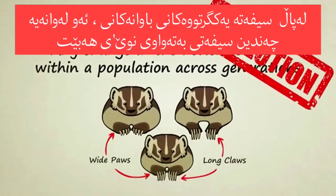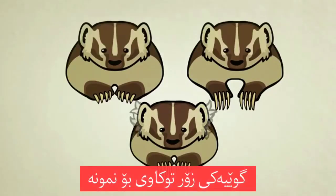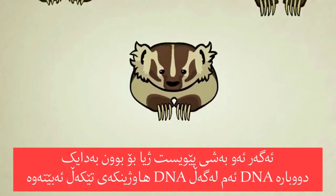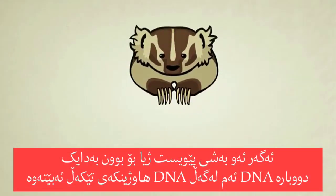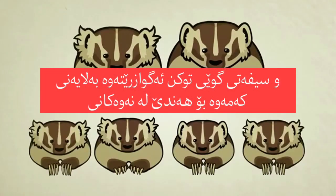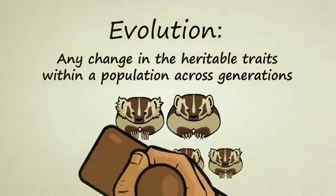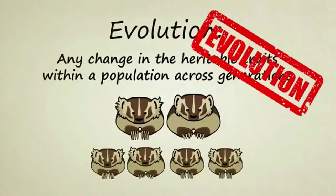Besides a unique recombination of her parents' traits, she might also have developed some completely new traits of her own due to DNA mutations — maybe extra hairy ears, for example. If she survives long enough to have kids, her DNA will combine with the DNA of her partner, and she'll pass on those extra hairy ears to at least some of her children. Again, evolution has officially occurred.